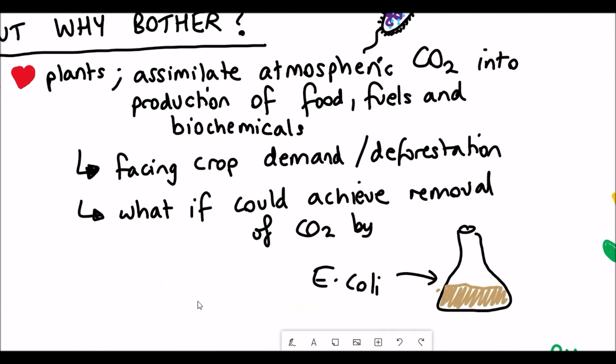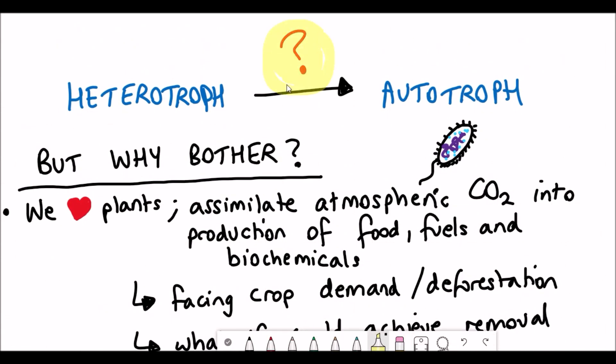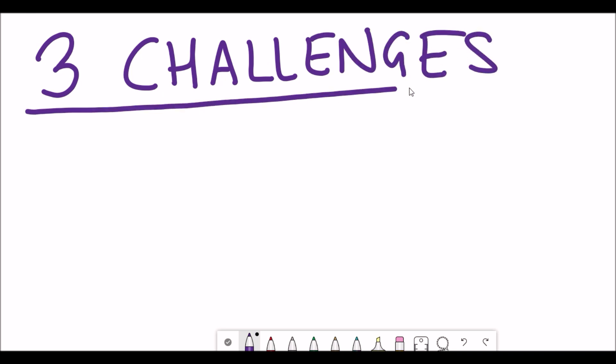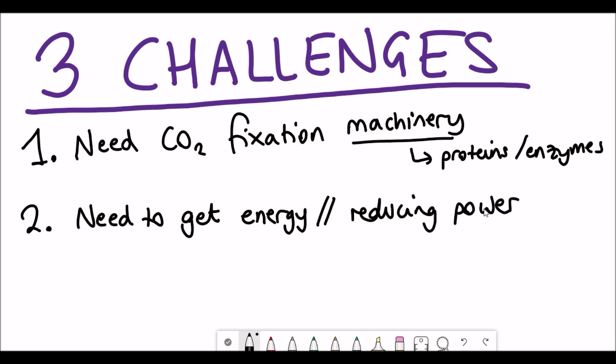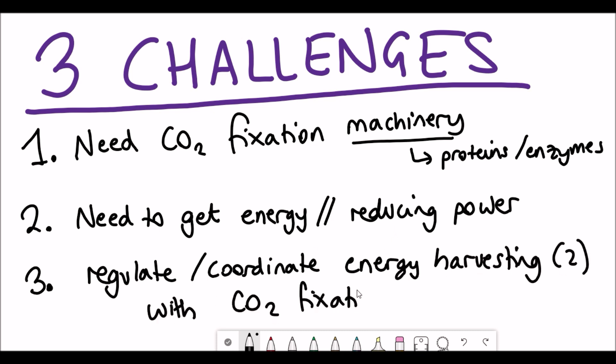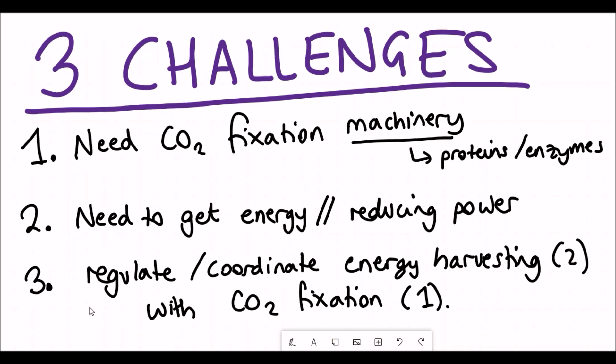So this brings me to the next question, which is how can this actually be achieved? Well, there are three main challenges that need to be addressed to be able to turn E. coli into autotrophs. Firstly, they need to have this carbon dioxide fixing machinery. And by machinery, I'm talking about the proteins and enzymes needed to catalyze the biochemical reactions. Secondly, they need to get this energy source as reducing power to carry out the process. And lastly, you need a way to regulate and coordinate the carbon dioxide fixing machinery with the energy reduction synthesis as well.